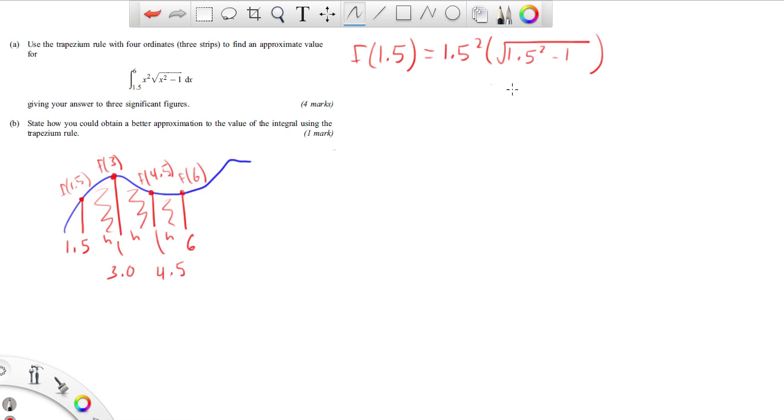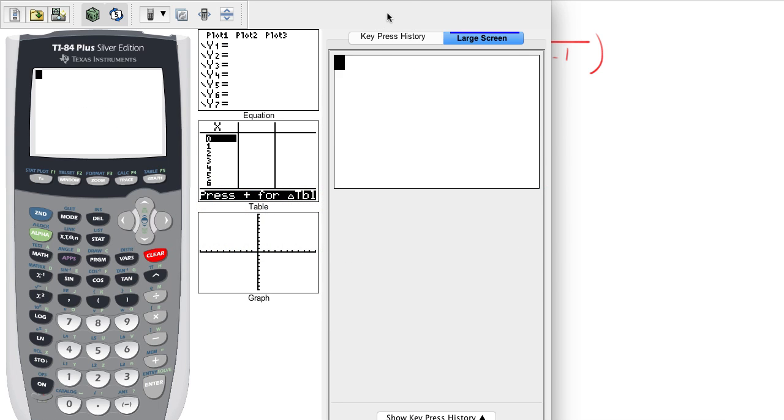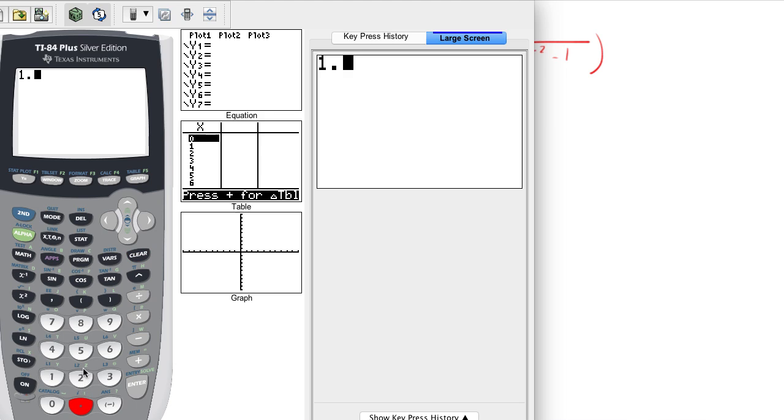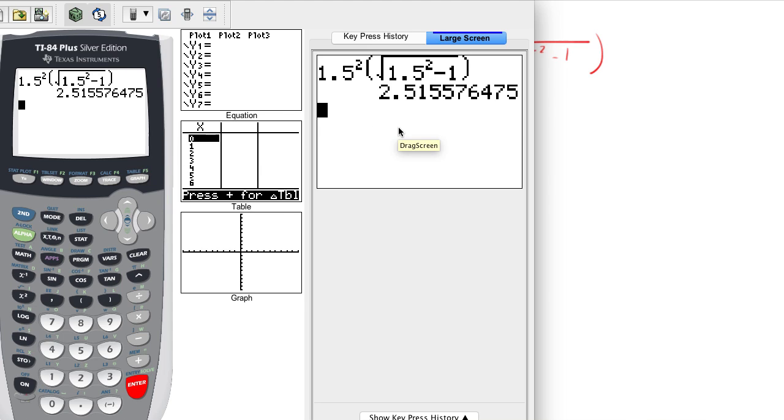If you're using your calculator, what we can do is try and make it look just like that. I'm going to have 1.5 squared, brackets are key here, then I'm going to put my square root, going to have the 1.5 squared minus 1, and I'm going to close my brackets for that. Now with this, the more numbers you have here the more accurate it's going to be. I'm going to choose 5 because why not. So that's going to be 2.51558.